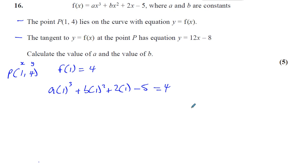So let's just work out what that gives us. Of course, 1 will be a + b + 2 - 5 = 4. So we've got a + b - 3 = 4. So a + b = 7, we could say. That's one equation we've formed from this information.